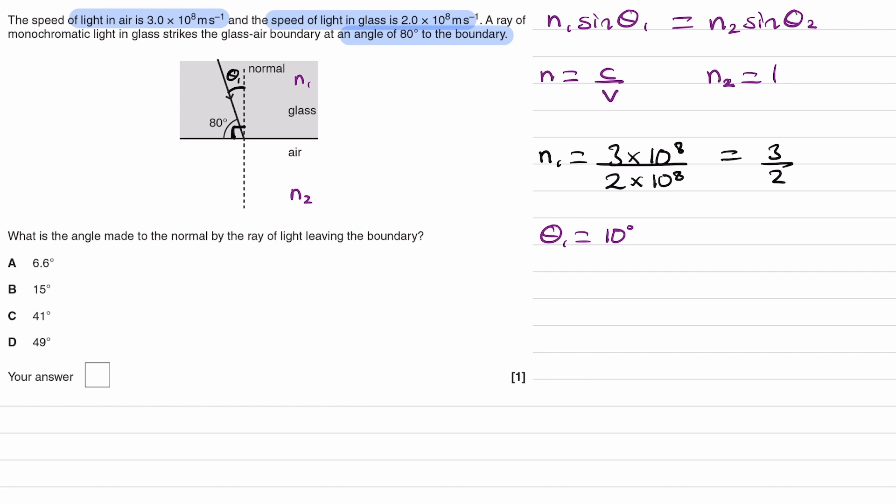Let's put this into our equation. Our equation then becomes 3 over 2 times sine theta 1, which is 10, is equal to n2, which is 1, sine theta 2.